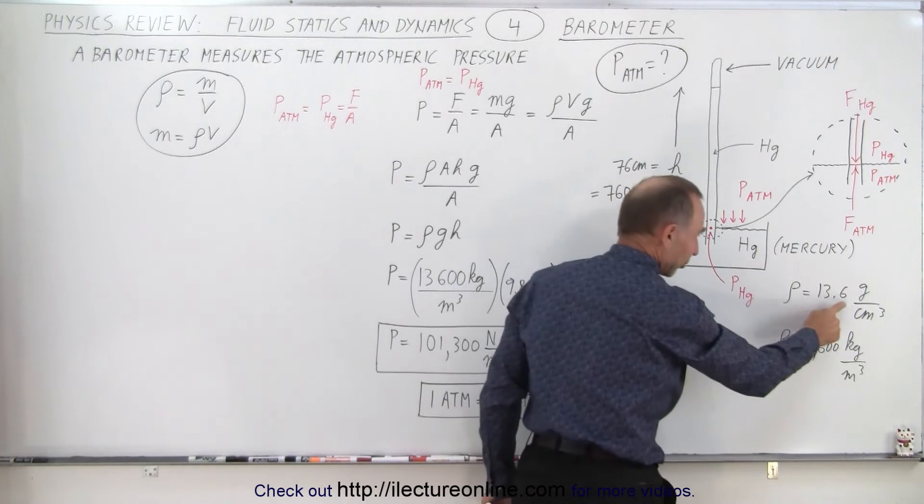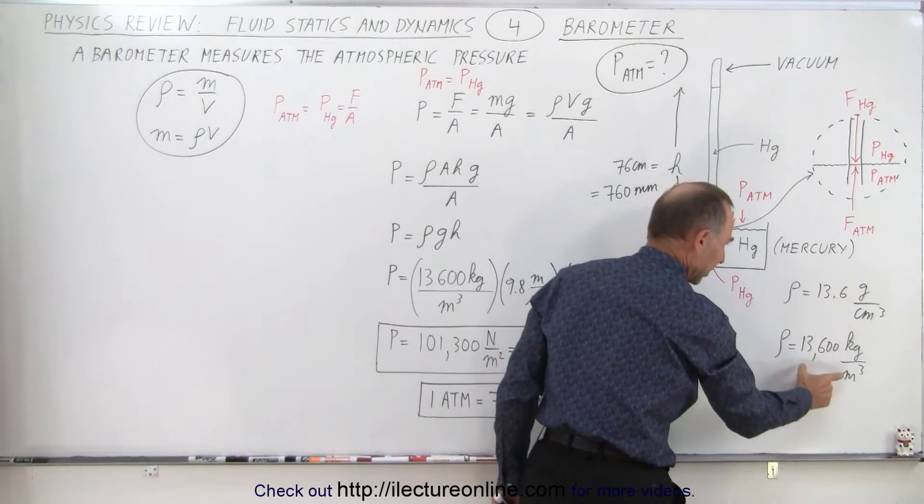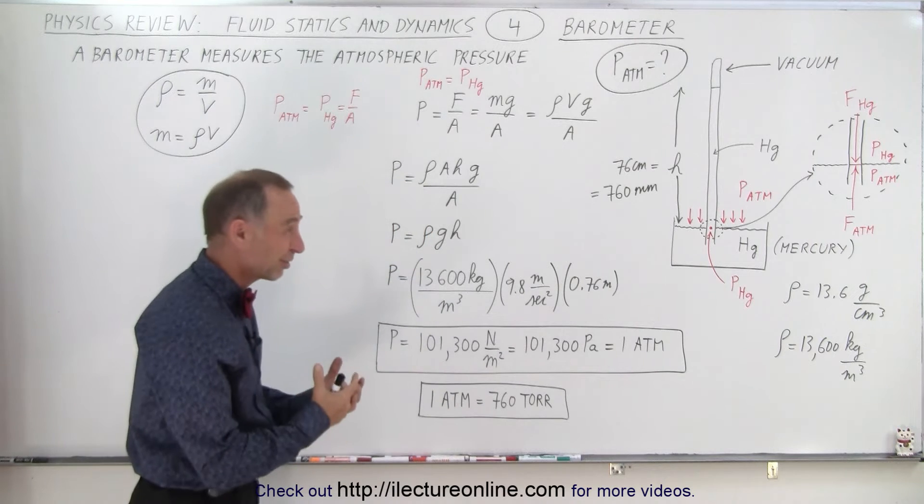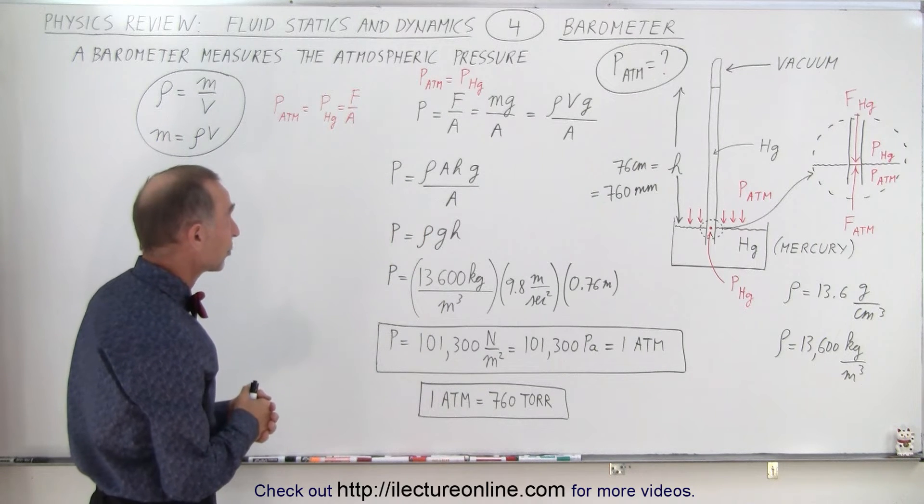Keep in mind that the density of mercury is 13.6 grams per cubic centimeter, or 13,600 kilograms per cubic meter. So it's a very dense liquid at room temperature.